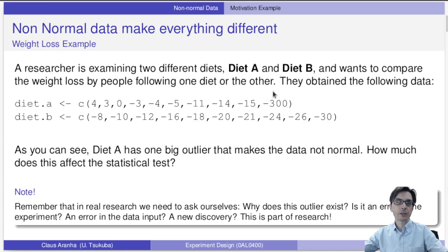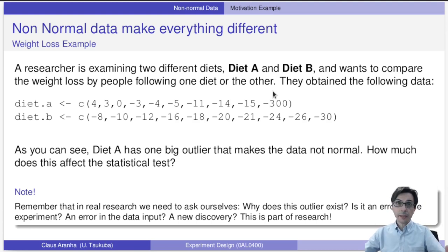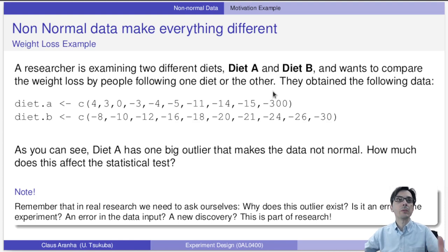As you can see, the 10 people that tried Diet A include one huge outlier — they lost 300 kilos. I have no idea how this happened; it could be a person that had a very large weight, but much more likely it was a data entry error. We don't know, but we have to deal with this data somehow.